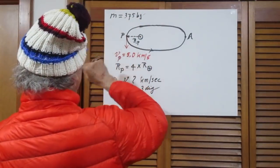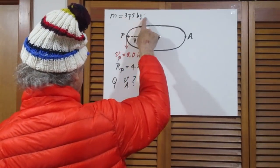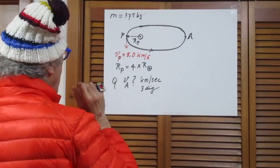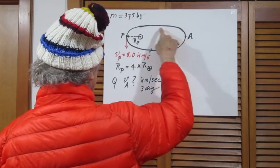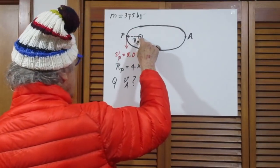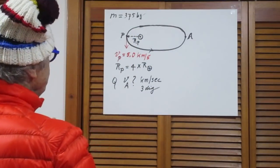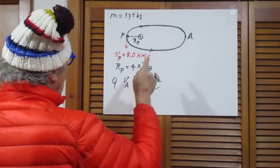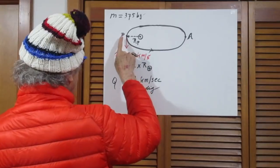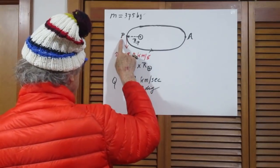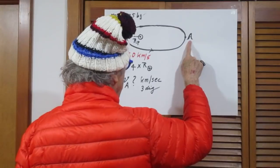There is a satellite with mass M, 375 kilograms, a small satellite, going in an elliptical orbit around the Earth. The closest distance to the Earth is called perigee and the farthest distance is called apogee.